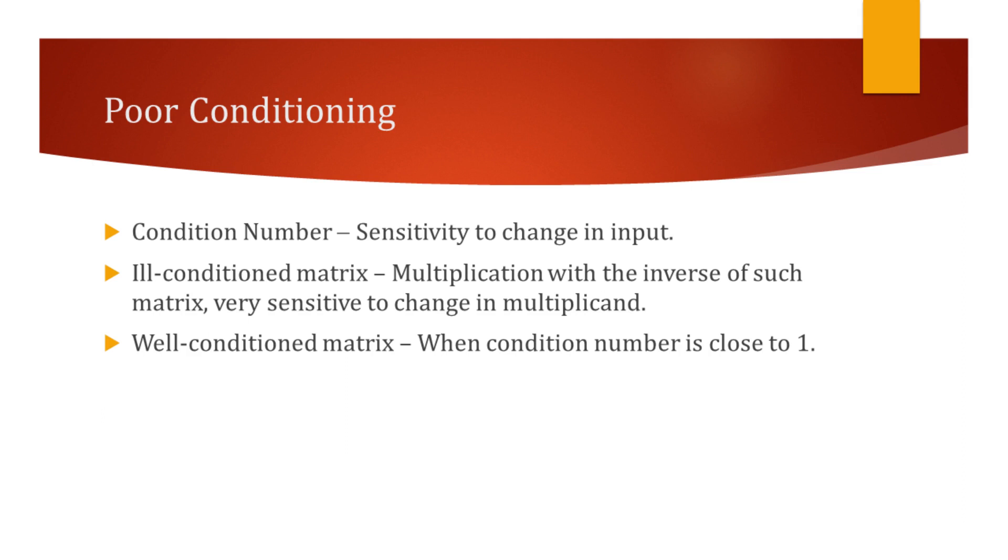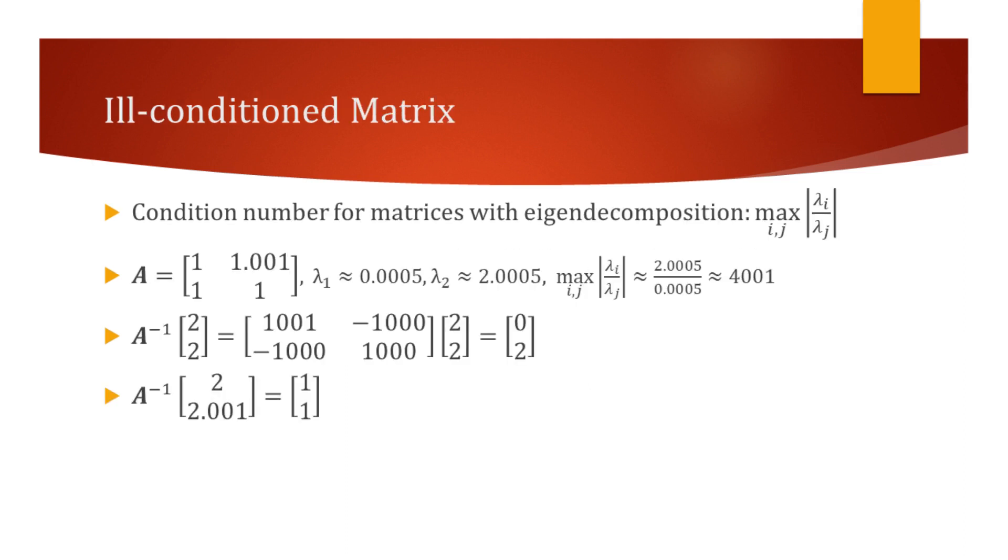We will now see how we can find the condition number and how it is correlated with the sensitivity. We find the condition number of a matrix by dividing its highest eigenvalue with its smallest and finding the absolute value of that result.